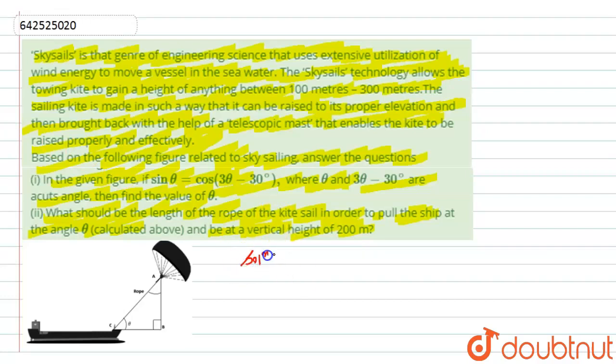Let's start with the solution. If we look at the figure, the value of AB is given to us as 200 meters, which is the height of this kite. Now, first we have to find this angle, and then we will find AC.